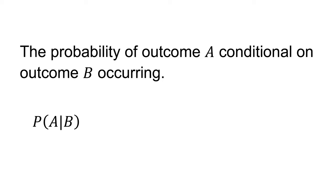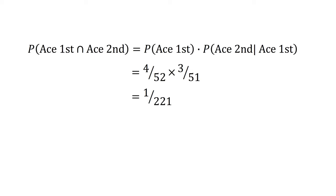When one outcome is conditional on another, such as the probability of outcome A conditional on outcome B occurring, we write this as p(A|B). Suppose we draw two cards from a deck without replacement. The probability of drawing an ace on the first draw is 4/52. If an ace is drawn first, the probability of drawing an ace on the second draw is 3/51 — one less ace and one less card. Multiplying these together gives 4/52 × 3/51 = 1/221.